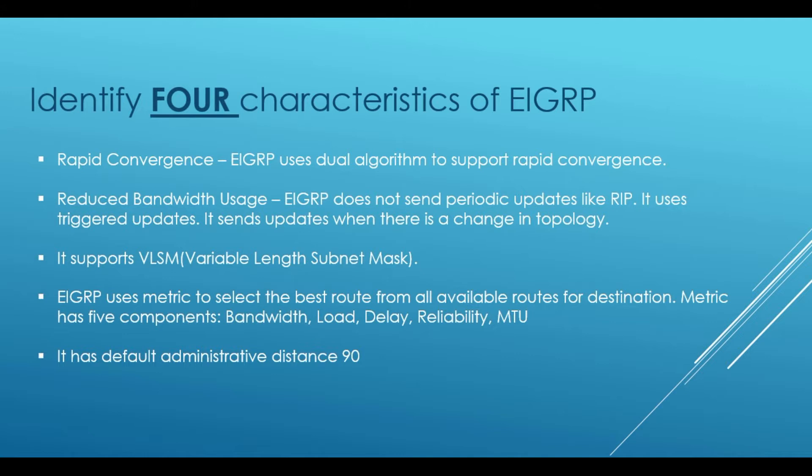Let's now see the four characteristics of EIGRP. The first is rapid convergence. EIGRP will learn the routes to remote networks automatically, and the DUAL algorithm is used to calculate the shortest path to the remote network. So when we display the routing table, where a route has been learned by EIGRP, you will see a capital D in front of that route. That capital D stands for the DUAL algorithm.